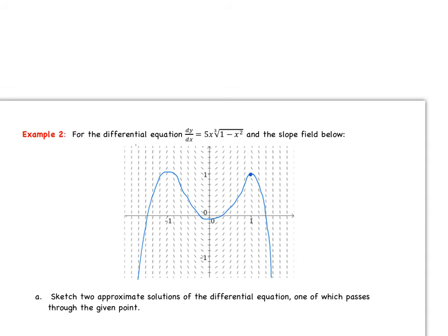This next example is still talking about the differential equation, and remember slope fields. So if we want to sketch two approximate solutions of the differential equation, one of which passes through the given point — I already drew that. Remember the rules: we have to go from edge to edge and follow those slopes. I just shifted everything up, and there we have it. Let's go ahead and solve this differential equation for the particular solution.